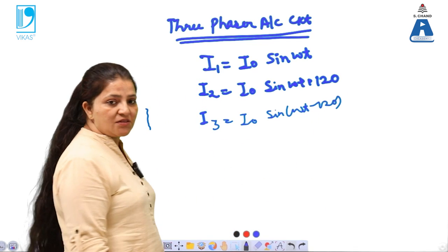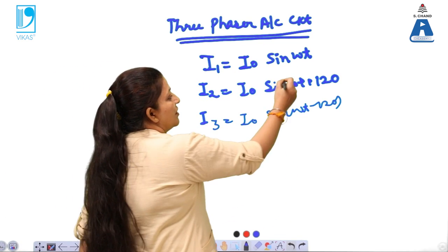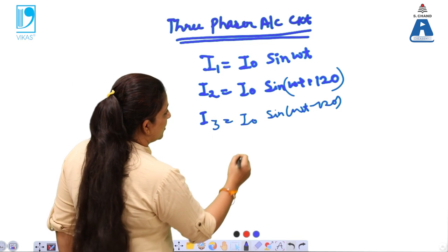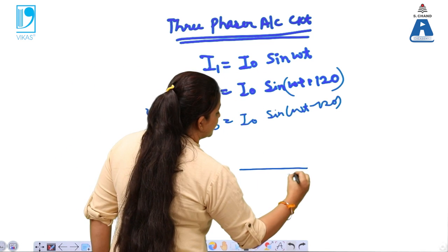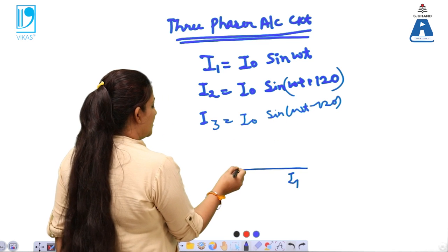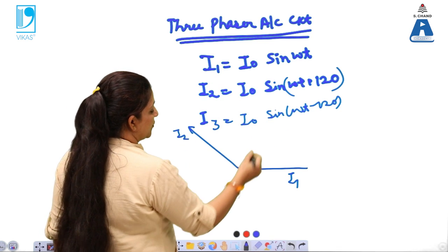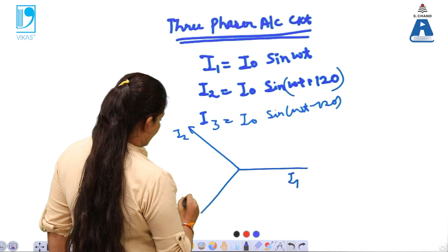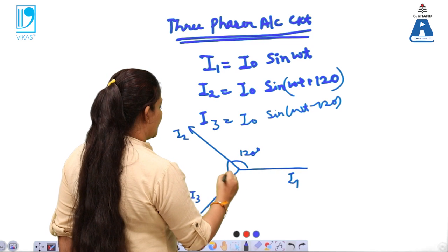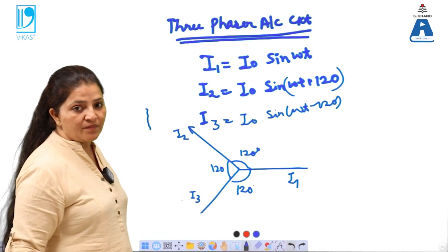So in this case three inputs are present. You can clearly see that there is a phase difference of 120° between each of these three. When we represent this on a diagram, if this is i1, the phase difference between i1 and i2 is 120°, and similarly between i2 and i3 the angle is 120° again. This is called the three-phasor diagram.